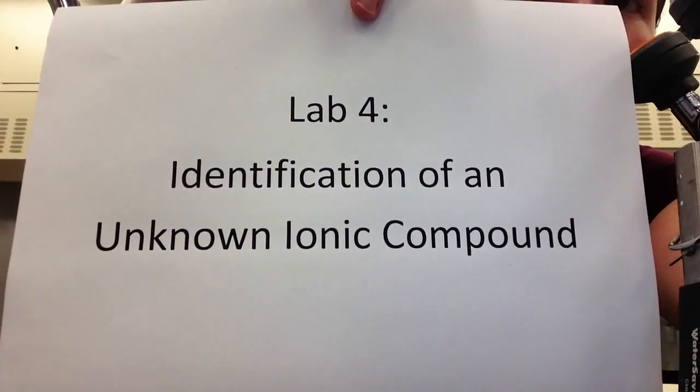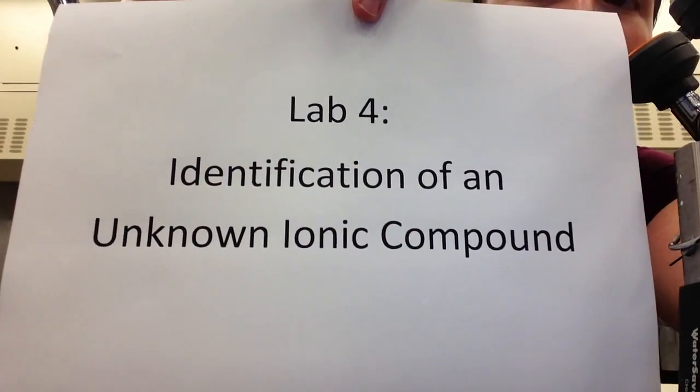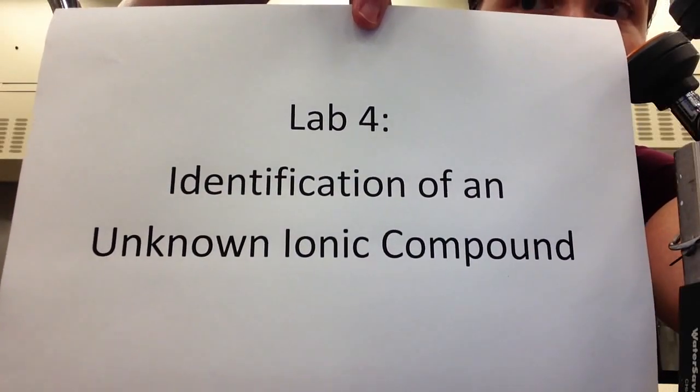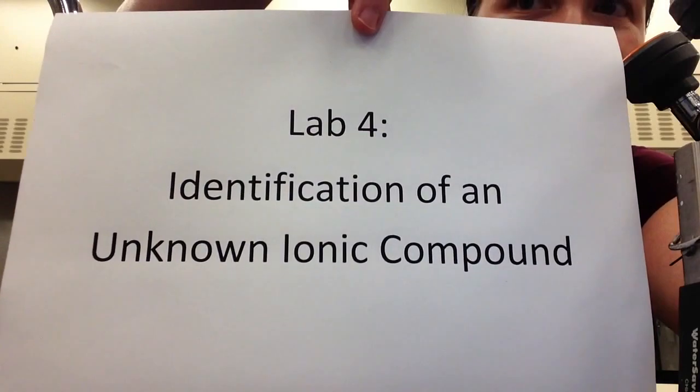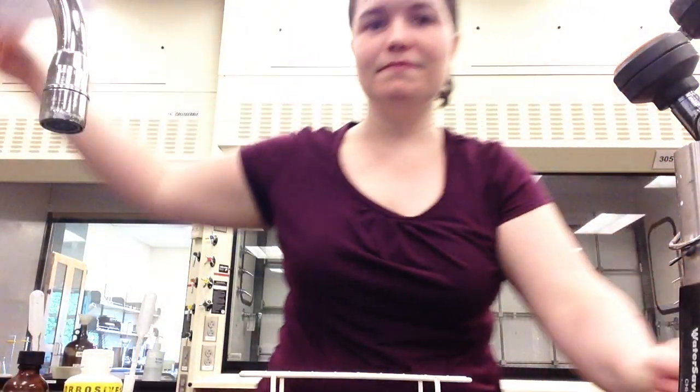This is the Chemistry 121 lab safety video for identification of an unknown ionic compound. In this lab, you will be experimentally determining the physical and chemical properties of a set of known cations and anions.